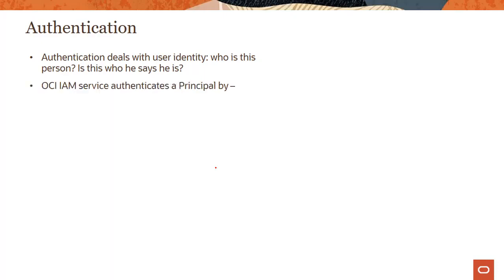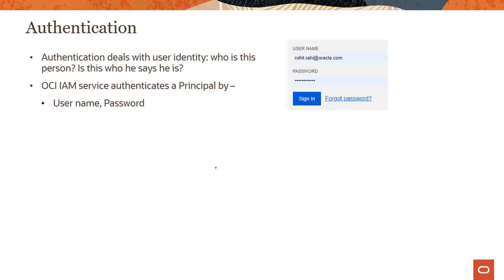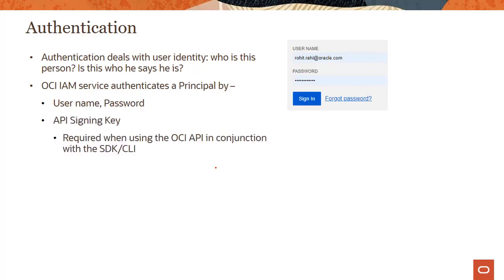In OCI, authentication is done in three different ways. The first one is simple: username and password. This is common — you do this many times a day accessing many systems. You provide your username and password, authenticate yourself saying 'I am the principal, this is my identity, let me in,' and the system either lets you in or not.